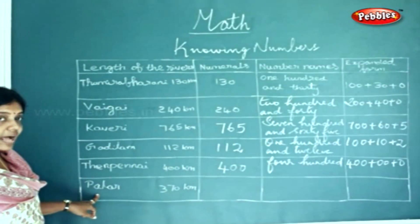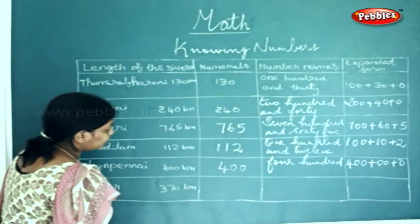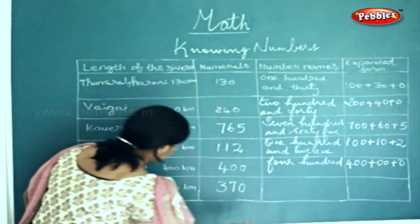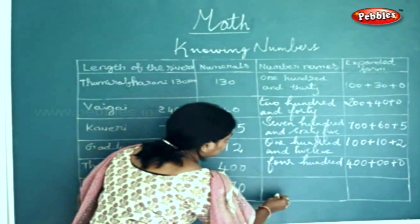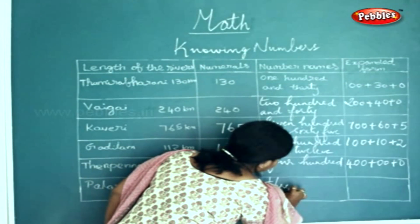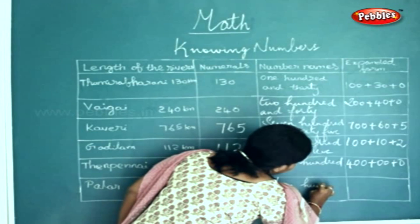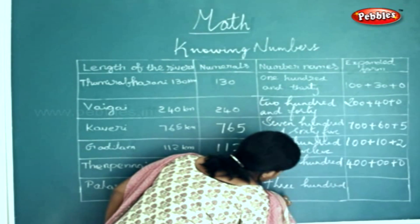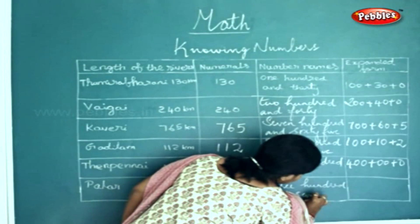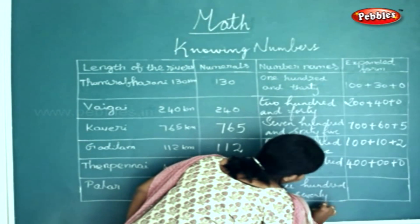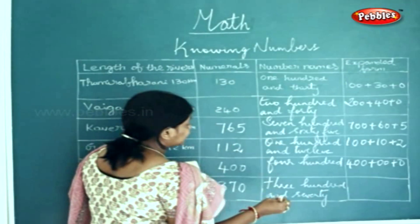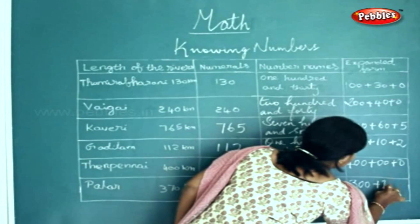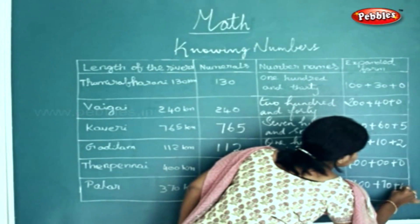Next is Palar, 370 kilometers. For numerals you will write it as 370. For the number names it will be written as three hundred and seventy. And for the expanded form we will write 300 plus 70 plus 0.